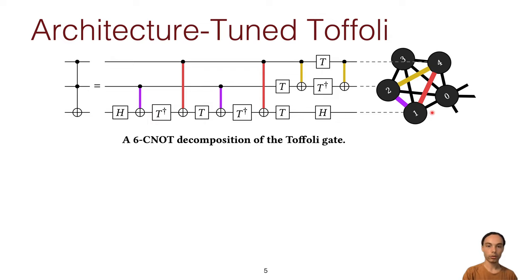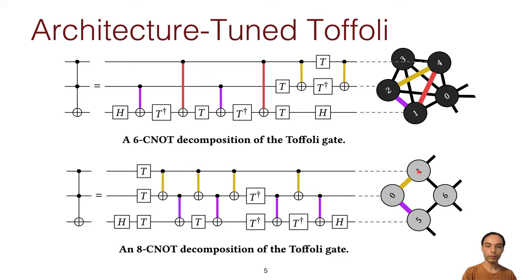However, if you have a more sparse connectivity hardware that only supports two of the three connections after you've routed it, then you have to actually add swaps here and here in your circuit, which correspond to six extra CNOTs. So you have 12 CNOTs total if you don't have that extra connection.